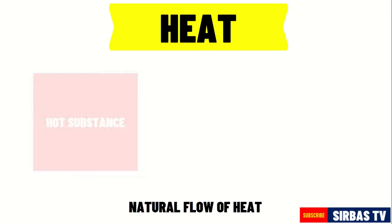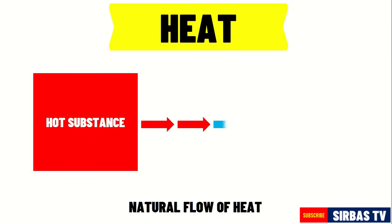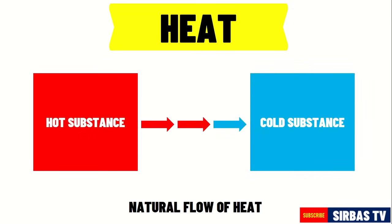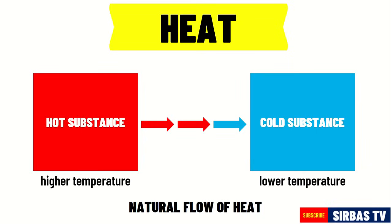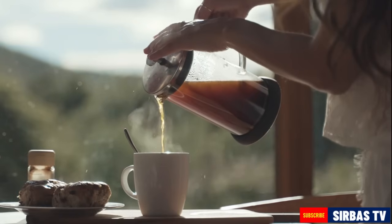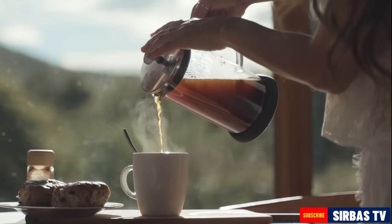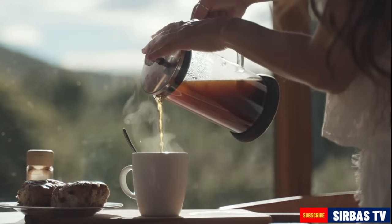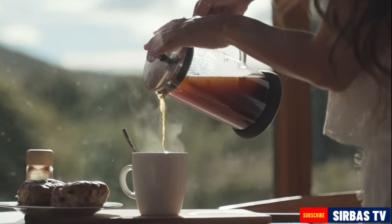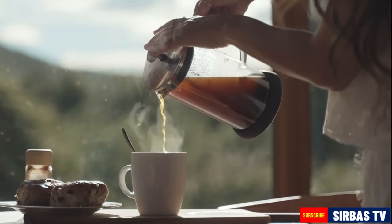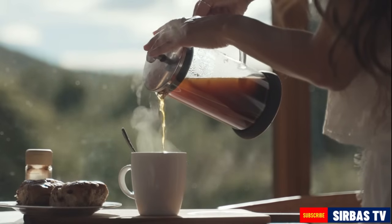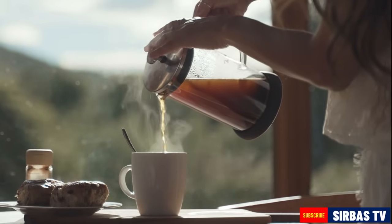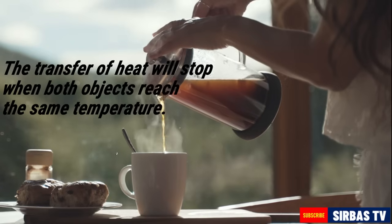The natural flow of heat is always from a hot substance to a cold substance, or from a substance with a higher temperature to a substance with a lower temperature. This is the reason why the spoon and mug became hotter in our previous example. The heat flowed from the boiling coffee, which has a higher temperature, to the mug and metal spoon, which have a lower temperature. The transfer of heat will stop when both objects reach the same temperature.